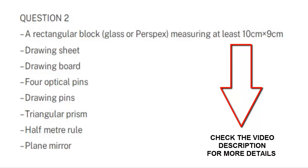Other apparatus include drawing pins, a triangular prism, a half meter rule, and a plain mirror. You need to go to the exam hall with your drawing board, but the drawing sheet, pins, plain mirror, half meter rule, and triangular prism will be given to you. This question, as I said, will come from refraction or reflection of light.